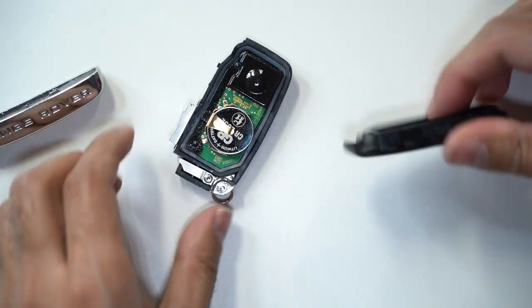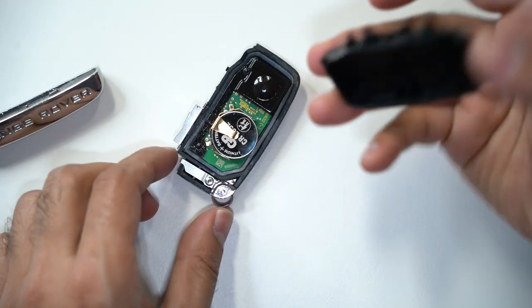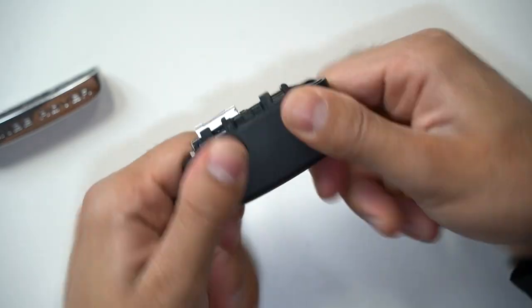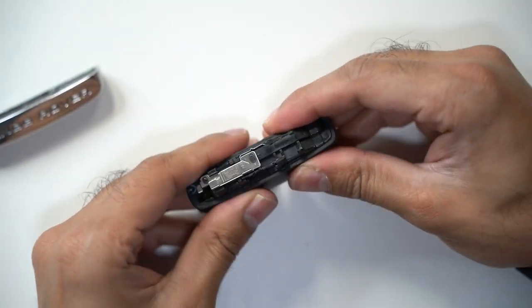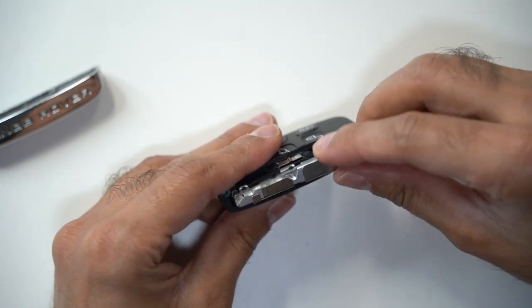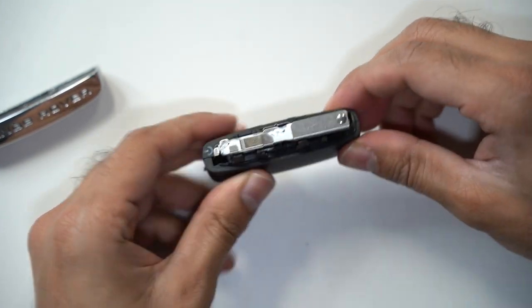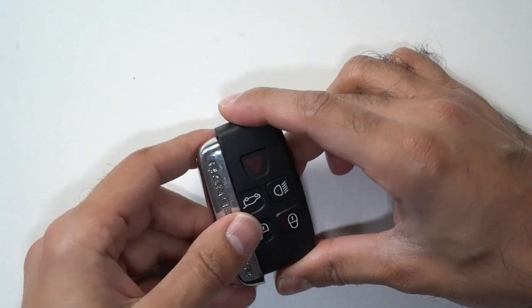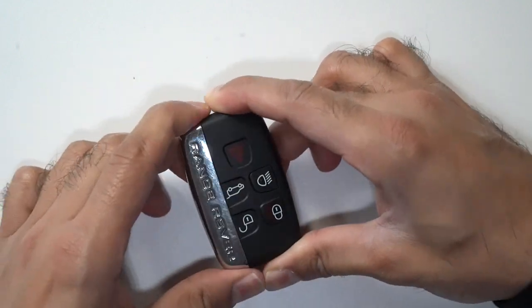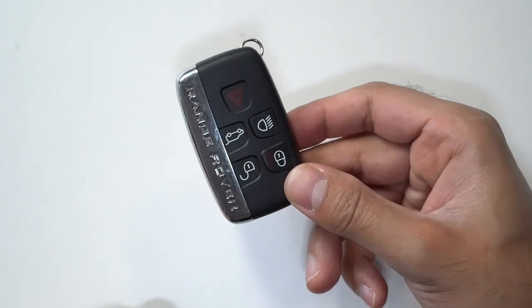In. Then you just slot this back on how it was before. There we go. And then you slot the key back in like that. Then you take the cover and push that back in, tighten it. And there you have it, now the battery is replaced.